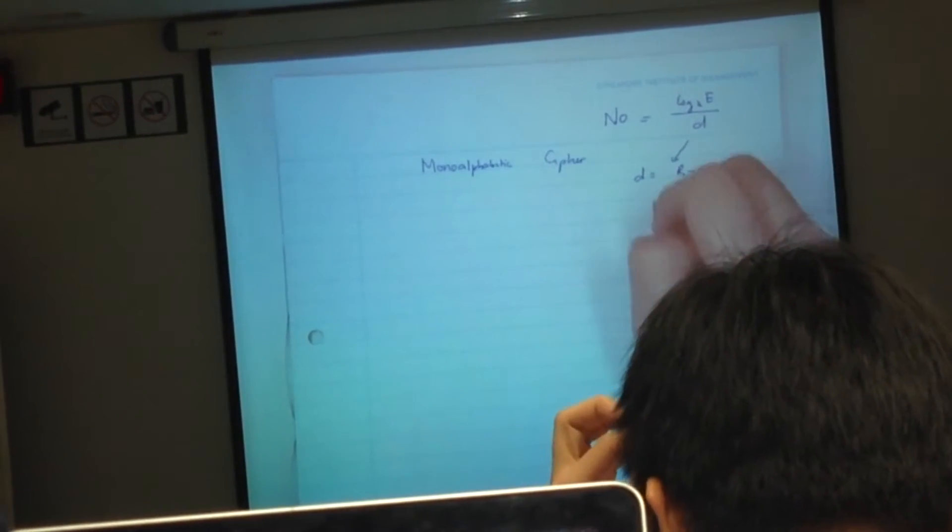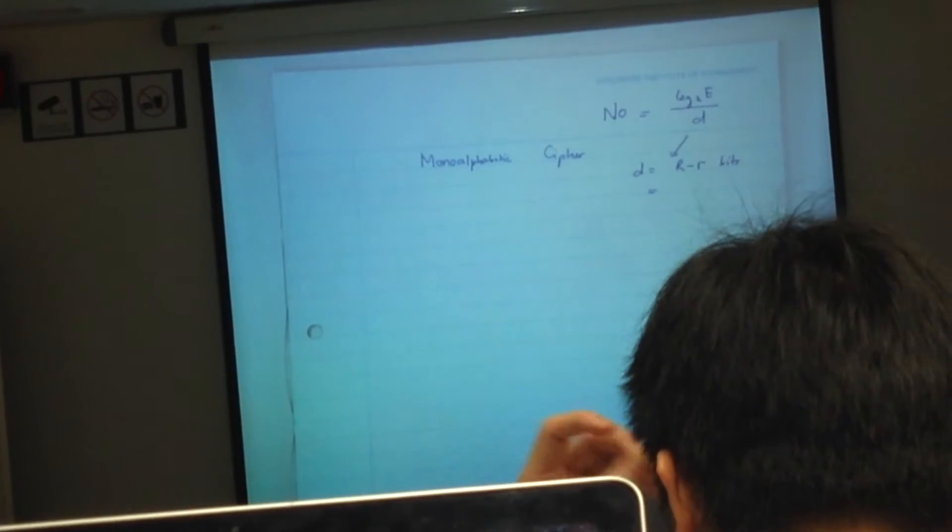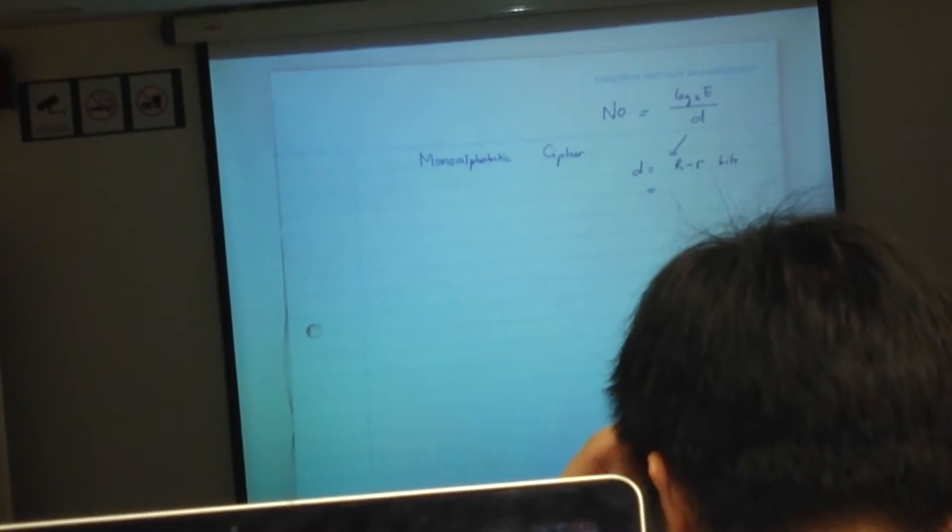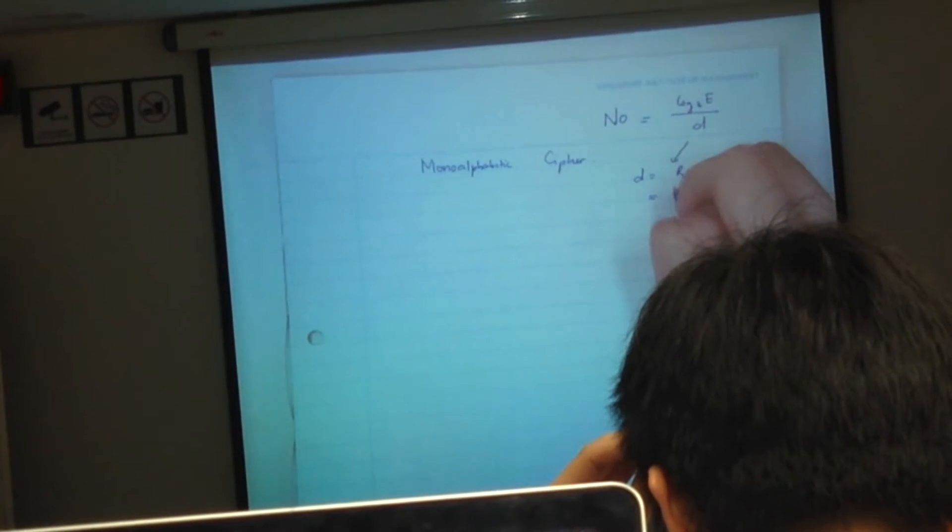So what is capital R? Capital R is equal to log 26 to the base 2, which means this is actually 4.7.